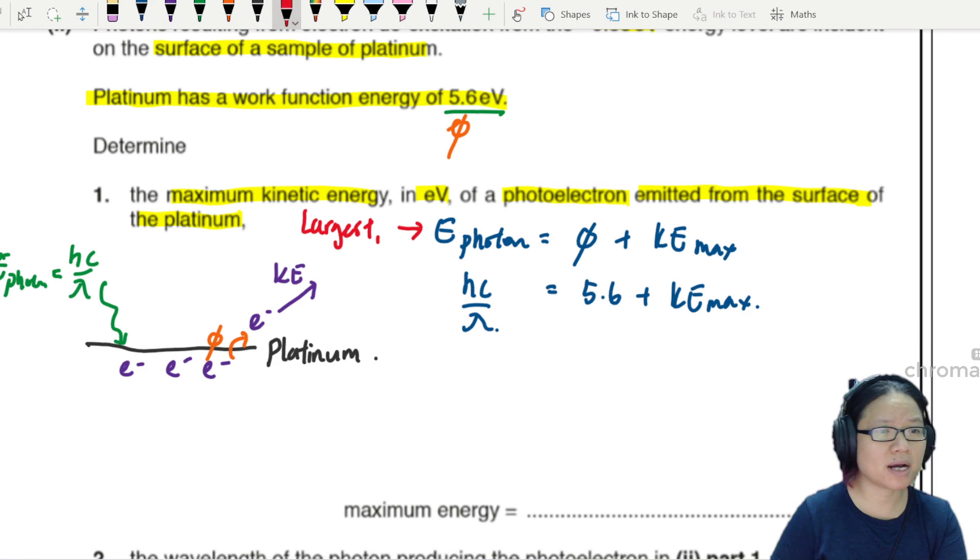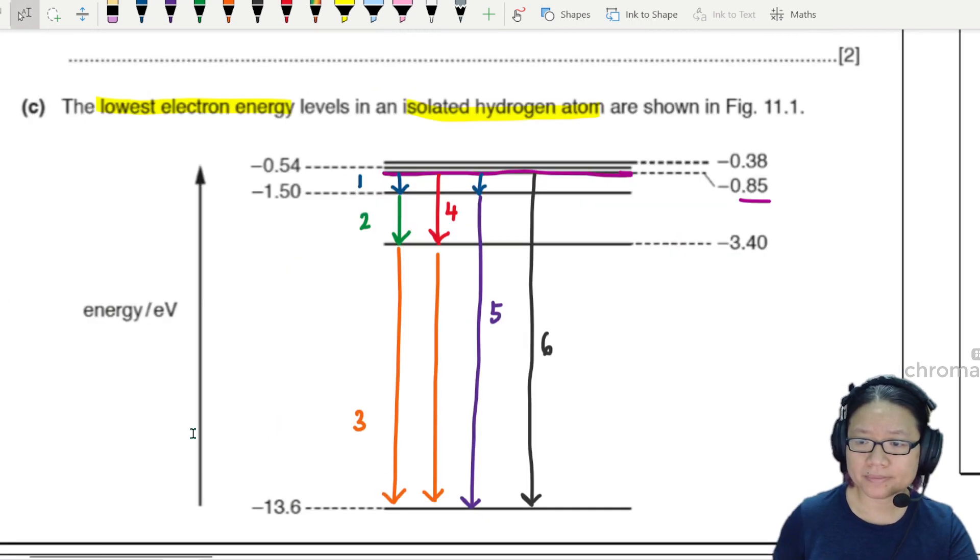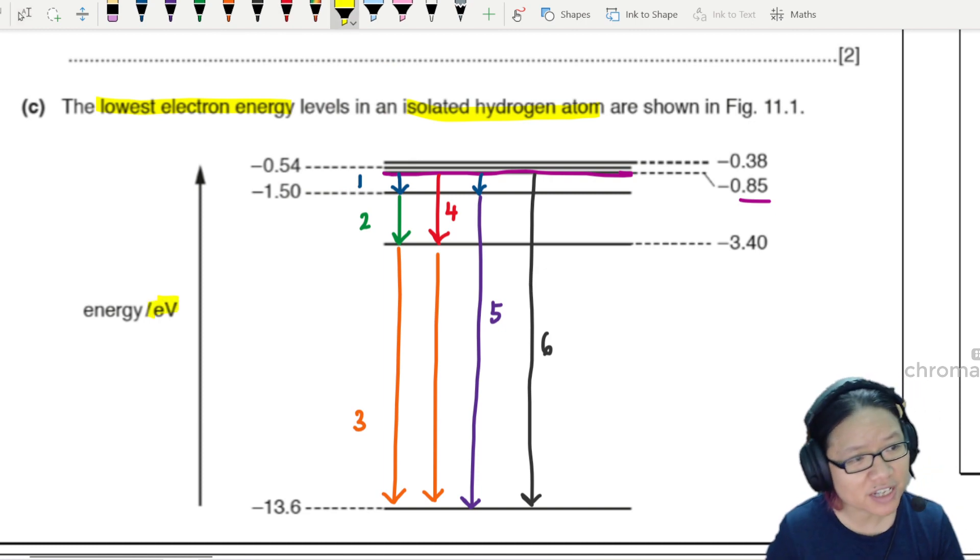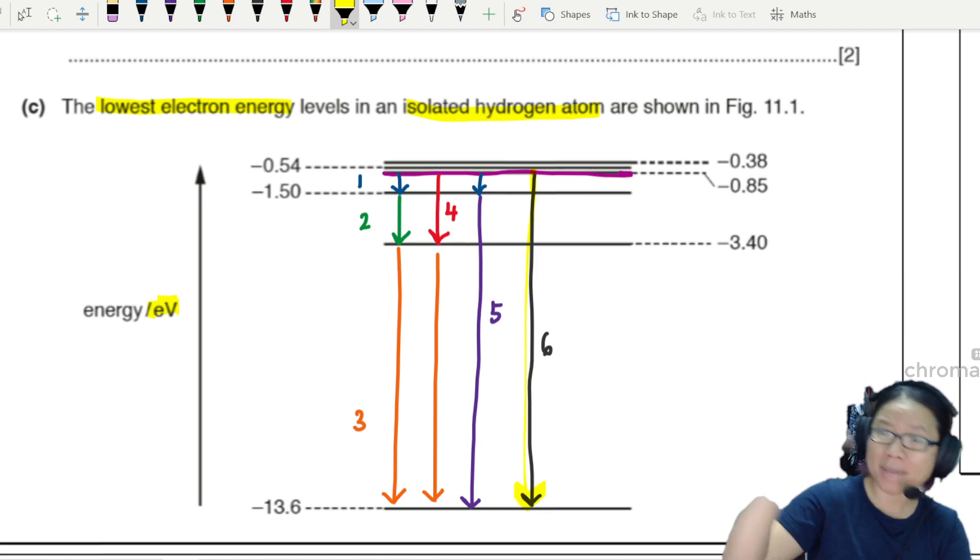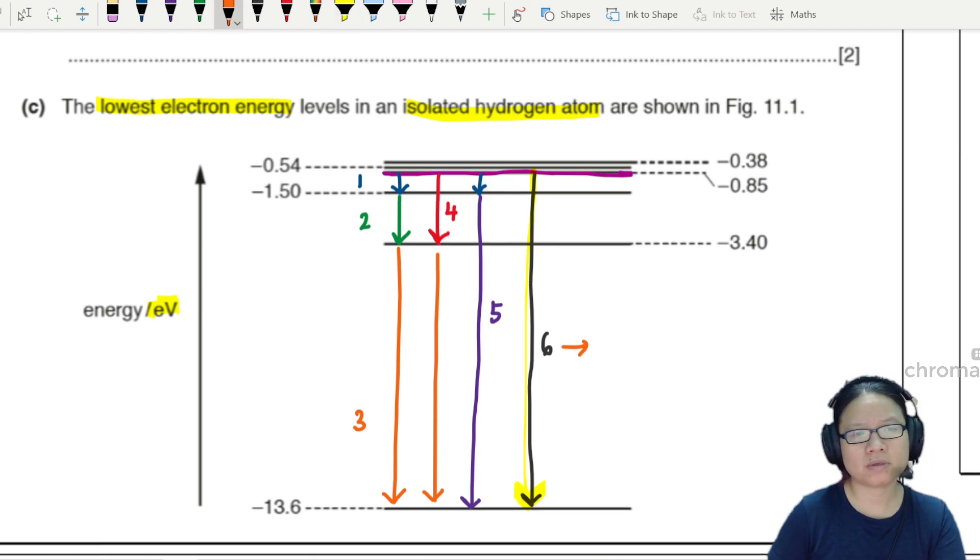Work function is the minimum energy. If I want to find the maximum KE, I will use 5.6 here and this is KE max. If I want the electron to have the most kinetic energy after it leaves the metal surface, I need to make sure the energy of the photon is the largest or greatest. This hc over lambda must be the biggest, so lambda has to be the smallest. But wait - we don't need lambda because the energy level diagram already has the energy levels nicely given in eV. We want the greatest energy transfer. Which one has the largest energy difference?